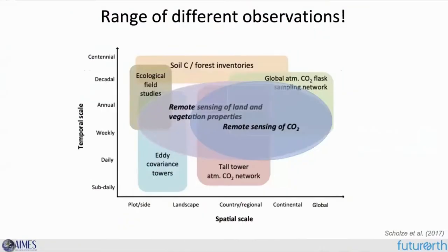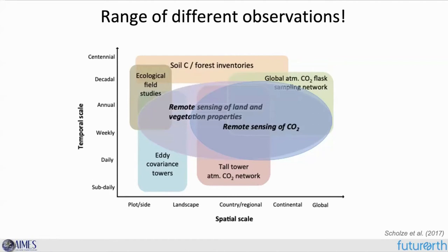The same concern about initial conditions applies to numerical weather prediction as well. We have a range of different observations over different temporal and spatial scales. This example shows different observations that can be used for constraining the carbon cycle — from remote sensing to eddy covariance towers, tall towers, and atmospheric CO2 networks — and we're trying to combine all these different types of observations into a data assimilation system.